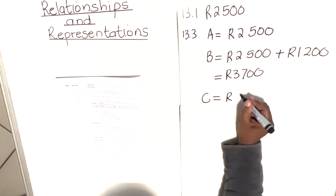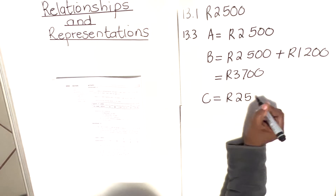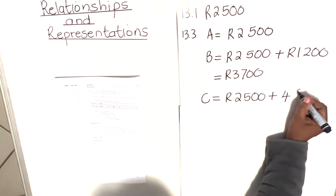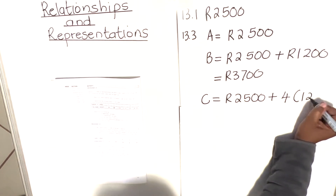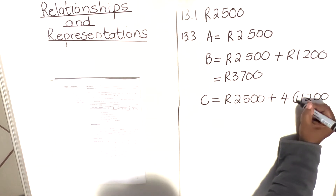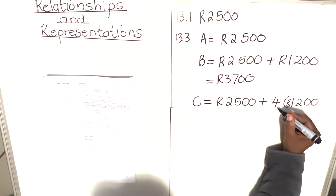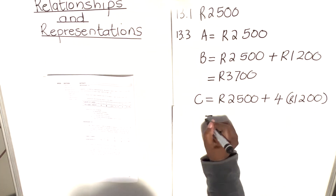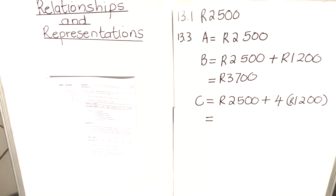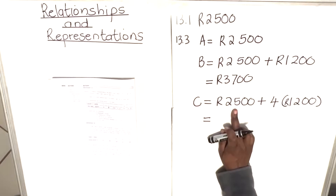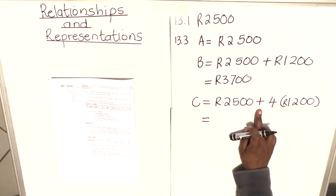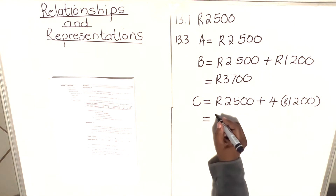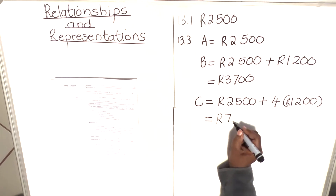For value C, it is the basic salary of R2 500 plus the commission for four clients. So that's four multiplied by R1 200, because he gets R1 200 for each client. R2 500 plus four times R1 200 equals R7 300.